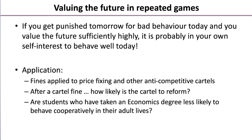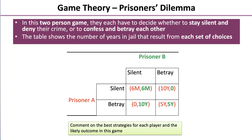An interesting question is whether students who have taken an economics degree are less likely to behave cooperatively in their adult lives. To illustrate game theory, we're going to have a look at the prisoner's dilemma. In this two-person game, they each have to decide whether to stay silent and deny their crime or to confess and betray each other. The table below shows the number of years in jail that result from each set of choices — we've got Prisoner A and Prisoner B. This is the classic example of game theory in action. There's a simple choice: they either stay silent or they betray, and the consequences for those actions are shown in red and green respectively.